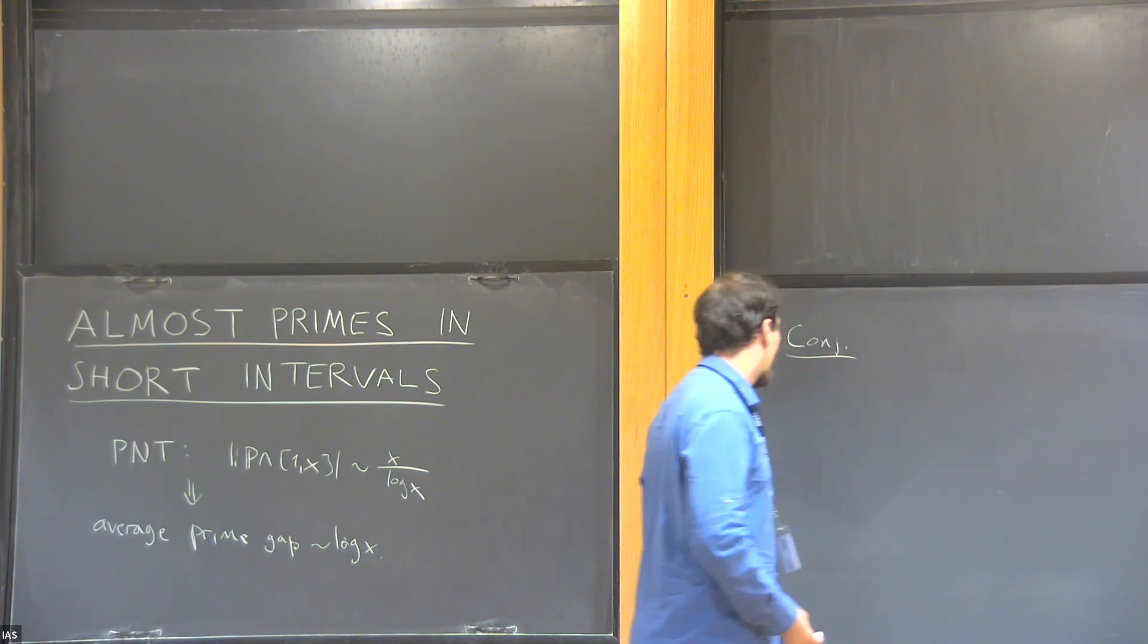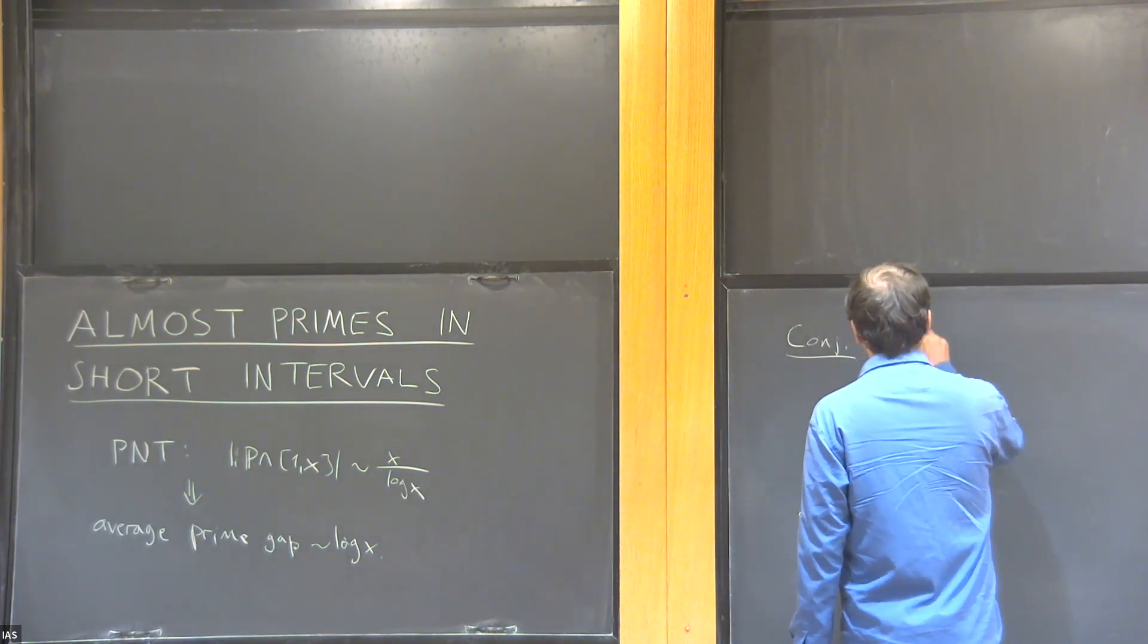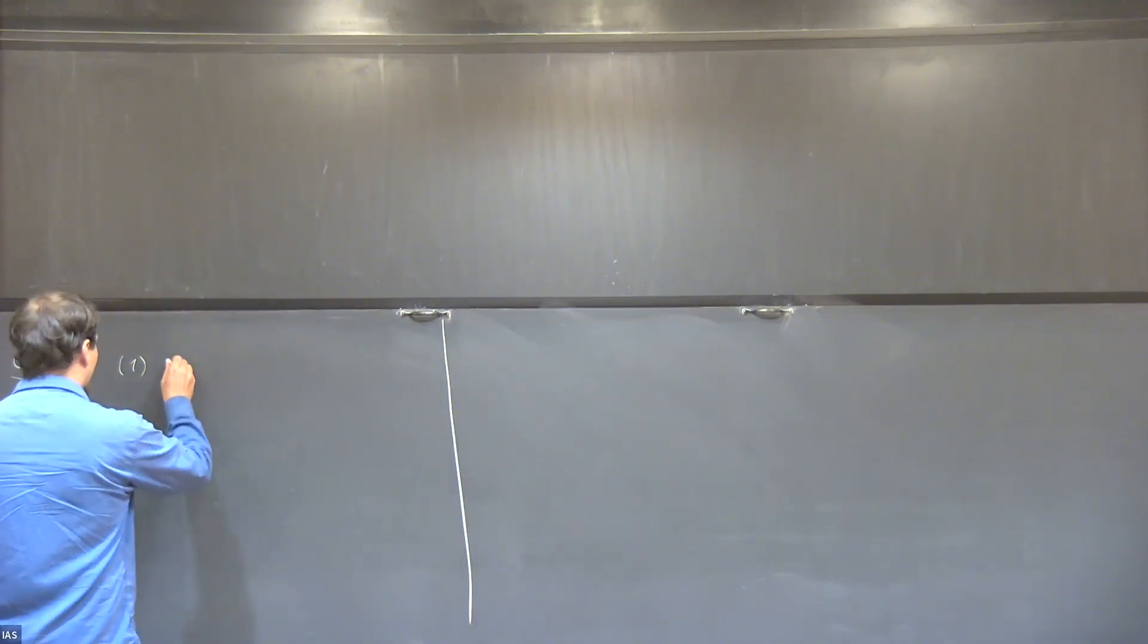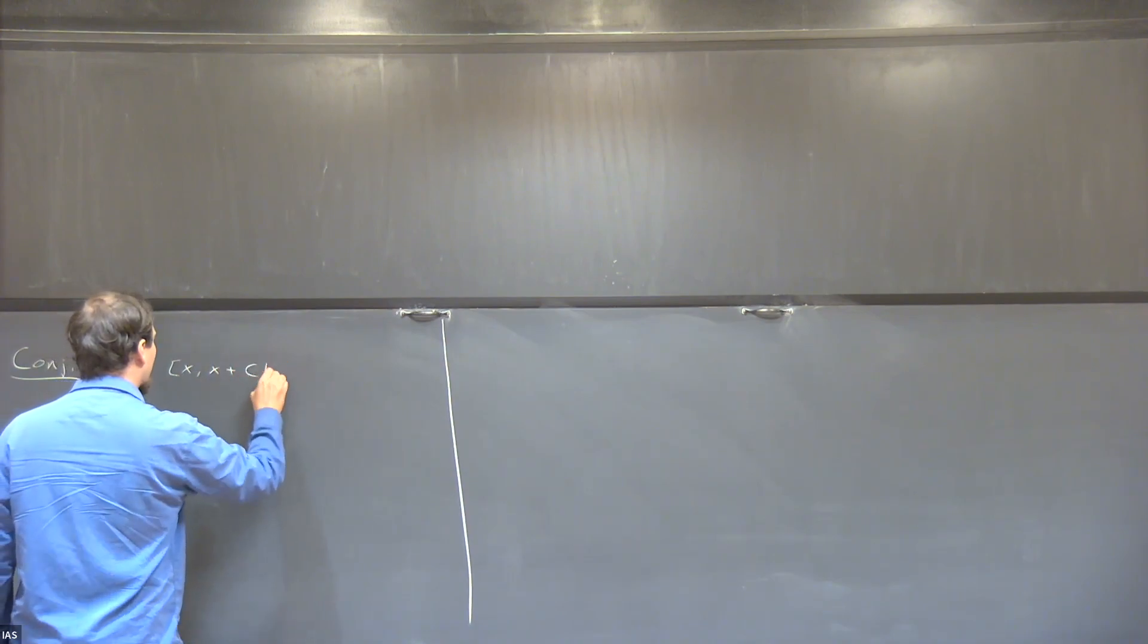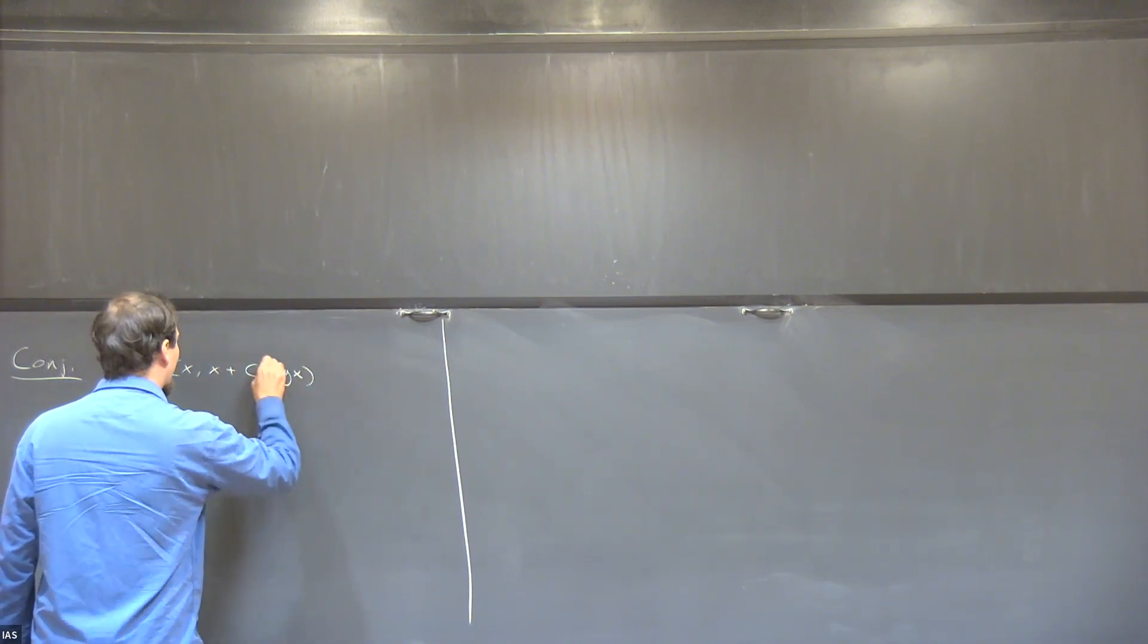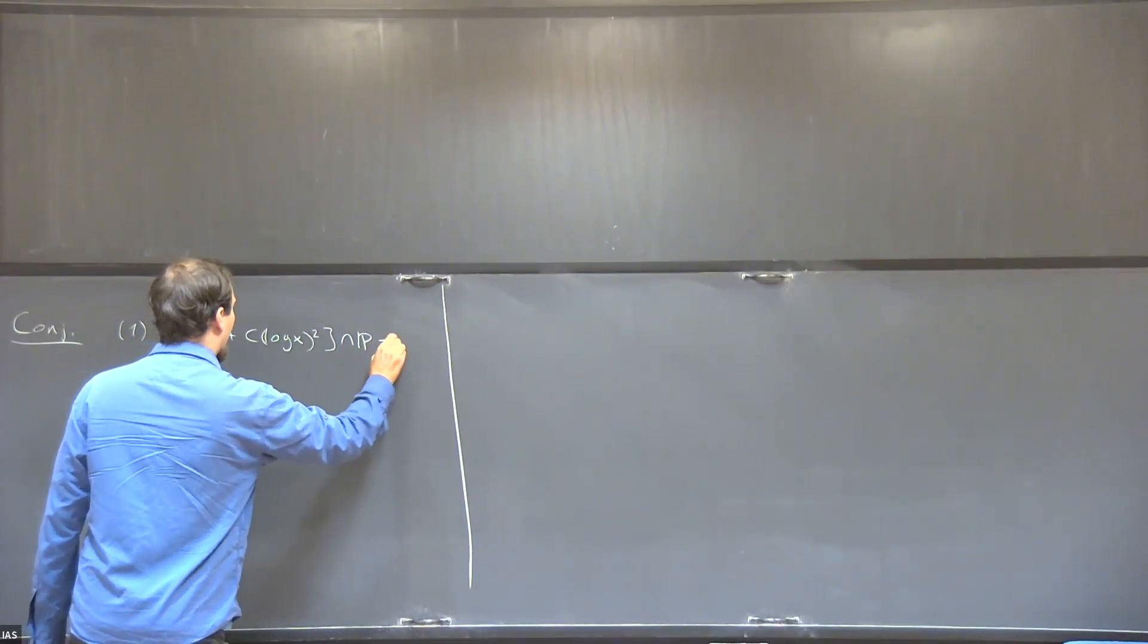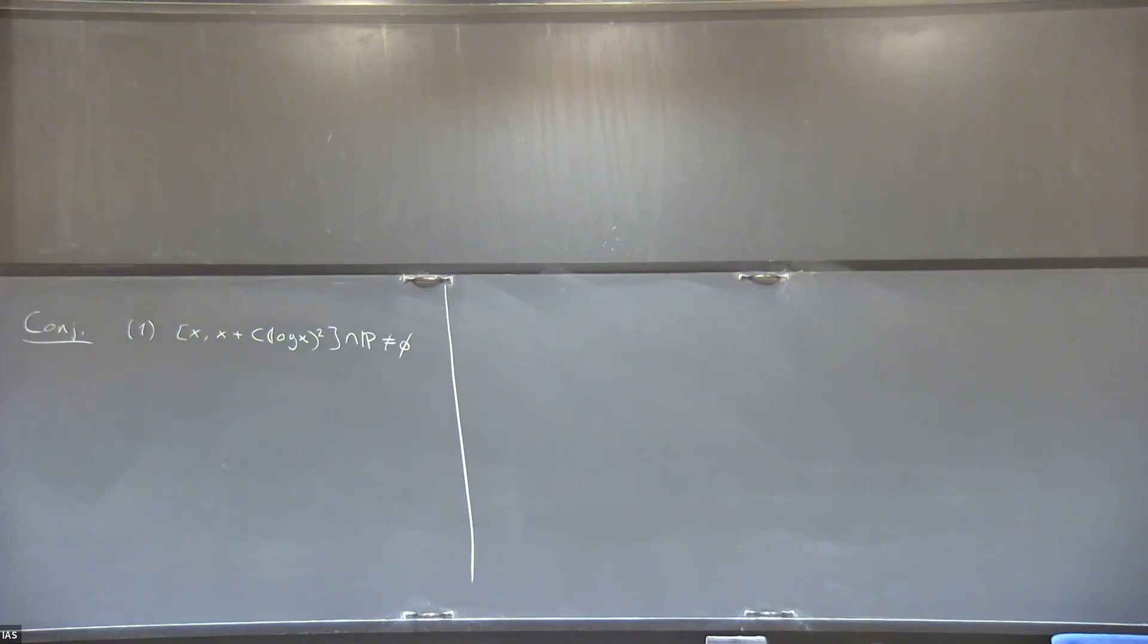The conjecture comes from probabilistic heuristics, and for the maximal gap, it says that intervals of length a constant times log X squared contain primes for any large enough X.